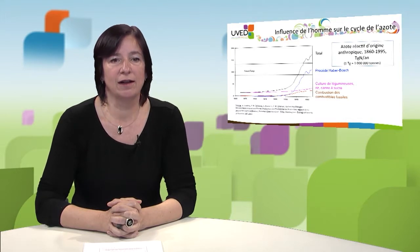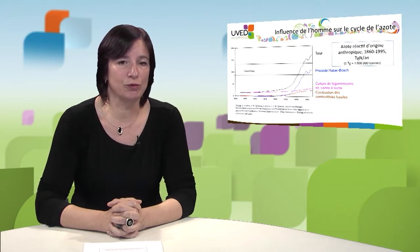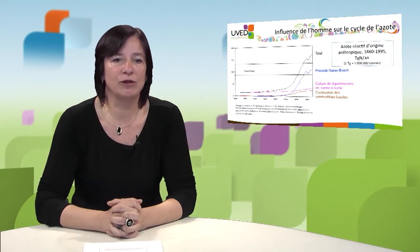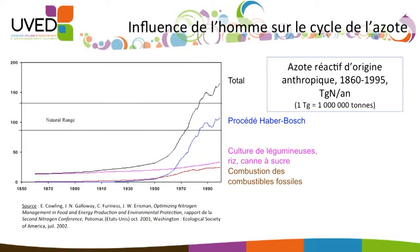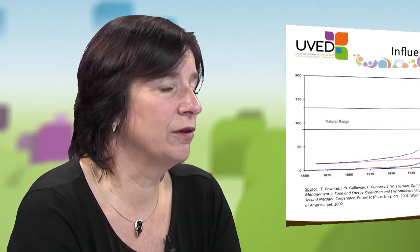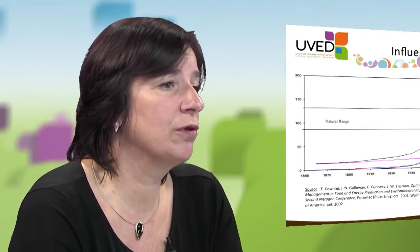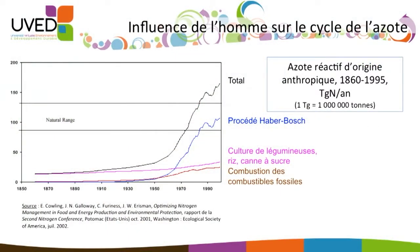Nitrogen is a simple chemical which is present everywhere. The air contains 80% nitrogen and we consume nitrogen every day because it's included in proteins. So nitrogen is crucial for life. What we can see on this graph is the quantity of reactive nitrogen which is circulated each year in the atmosphere since the end of the 19th century. Nitrogen becomes reactive when it's in a molecule which has a positive or negative impact on the biosphere — as opposed to non-reactive nitrogen which composes the atmosphere.